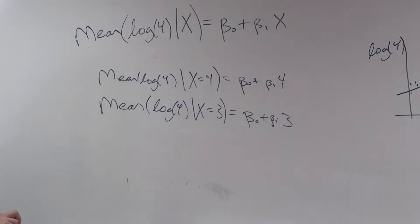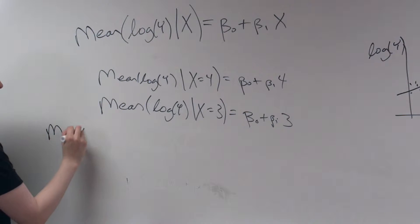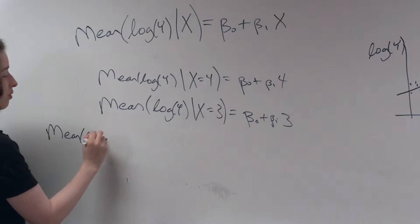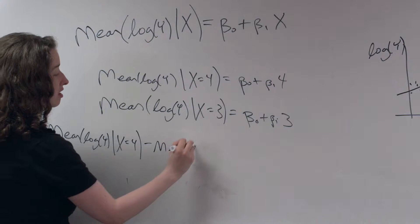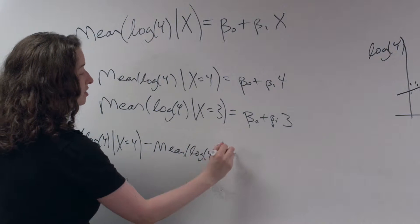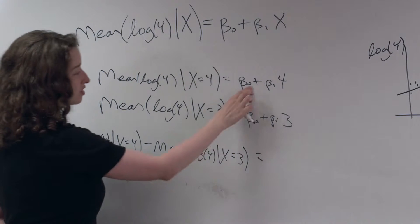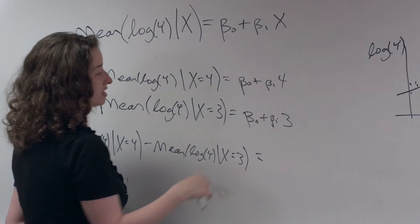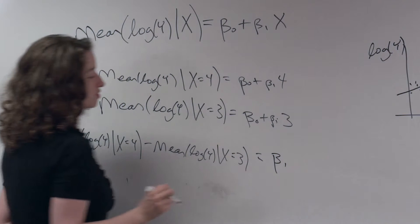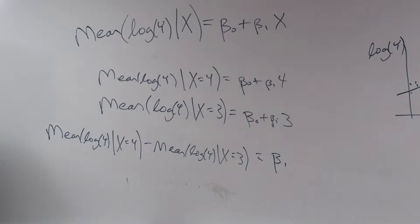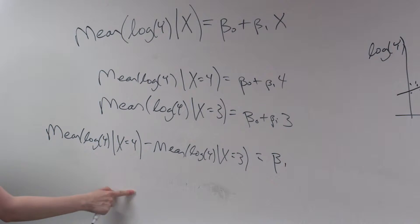I'm going to do the same kind of subtraction that I did earlier. The mean of the log of y when x is equal to 4, minus the mean of the log of y when x is equal to 3, is equal to beta 0 minus beta 0 — those cancel — and beta 1 times 4 minus beta 1 times 3 equals beta 1 times 1. This should look a little bit familiar if you remember the parallel discussion we had in the context of t-tests on the log scale.